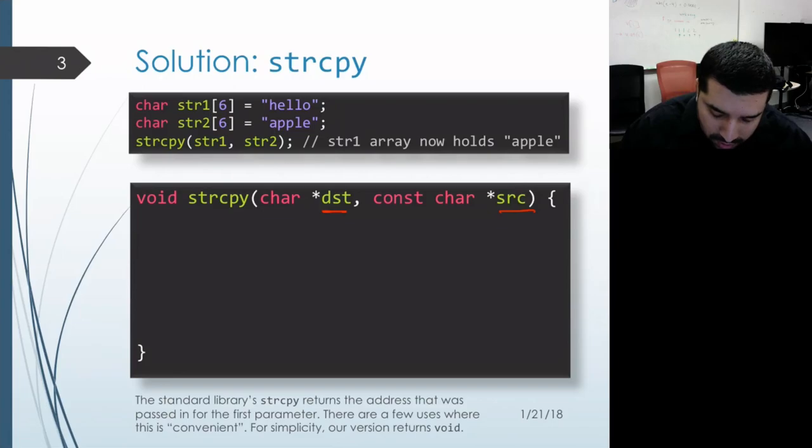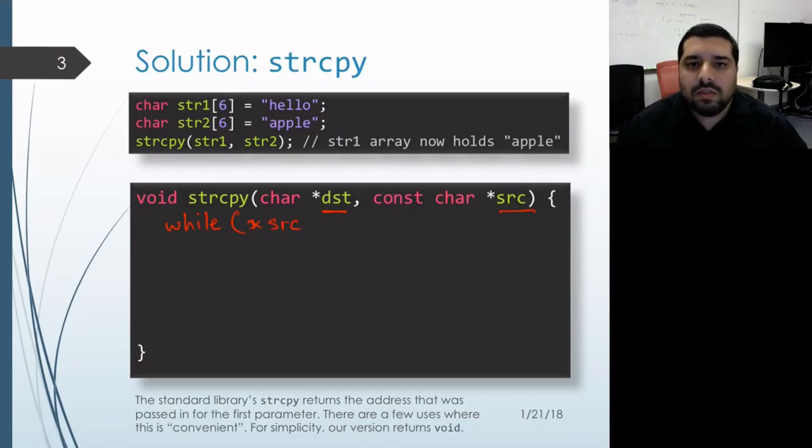We'll use a while loop to traverse through the source, and we need to dereference into the source in order to actually read the character value that's being pointed at. Our termination condition is going to be when we hit the null terminator.